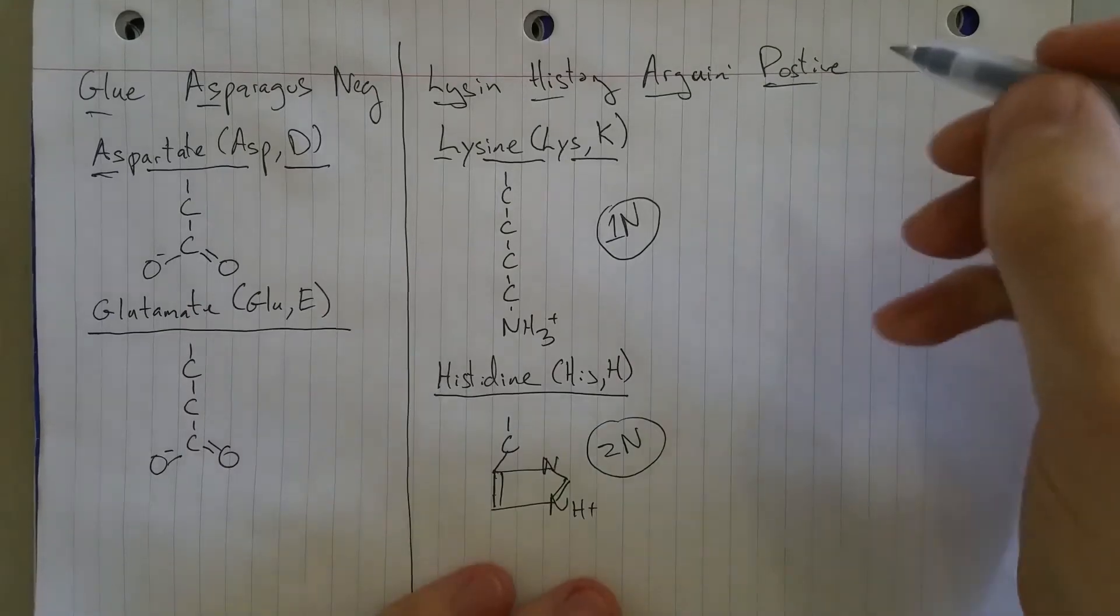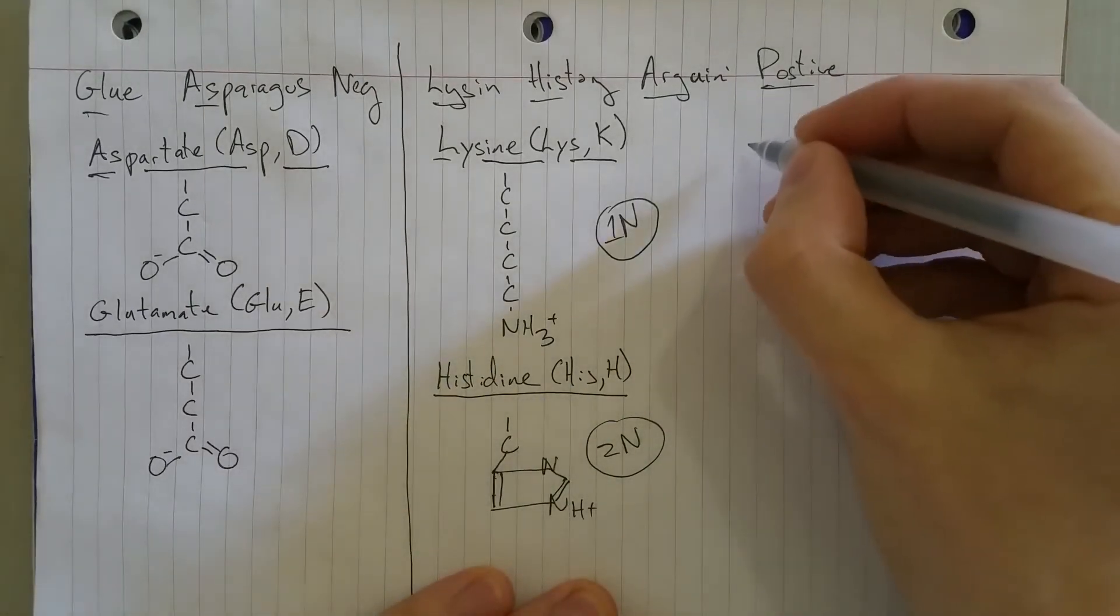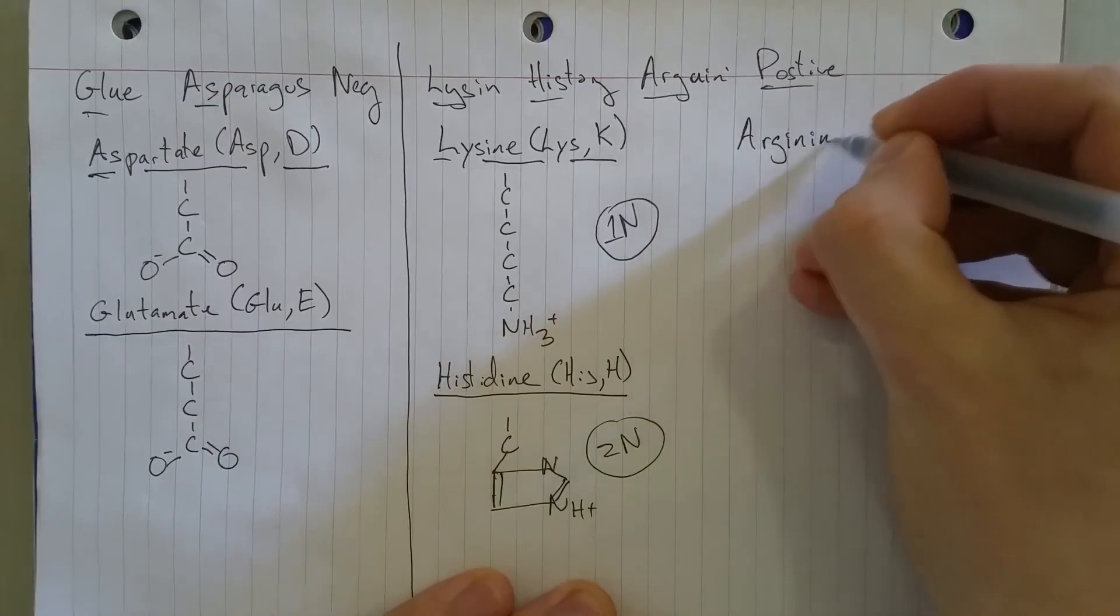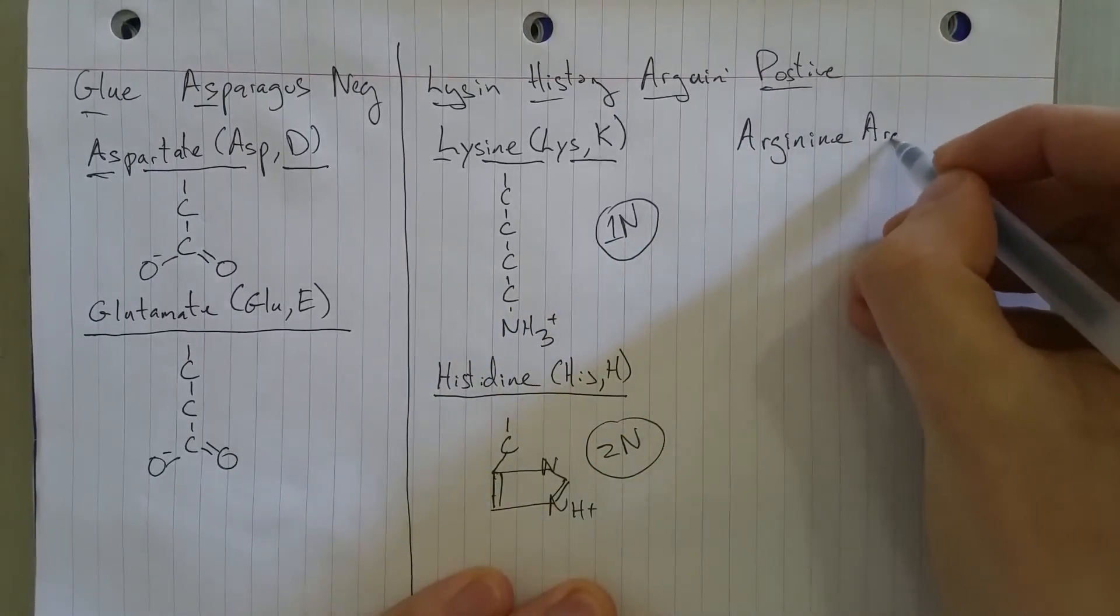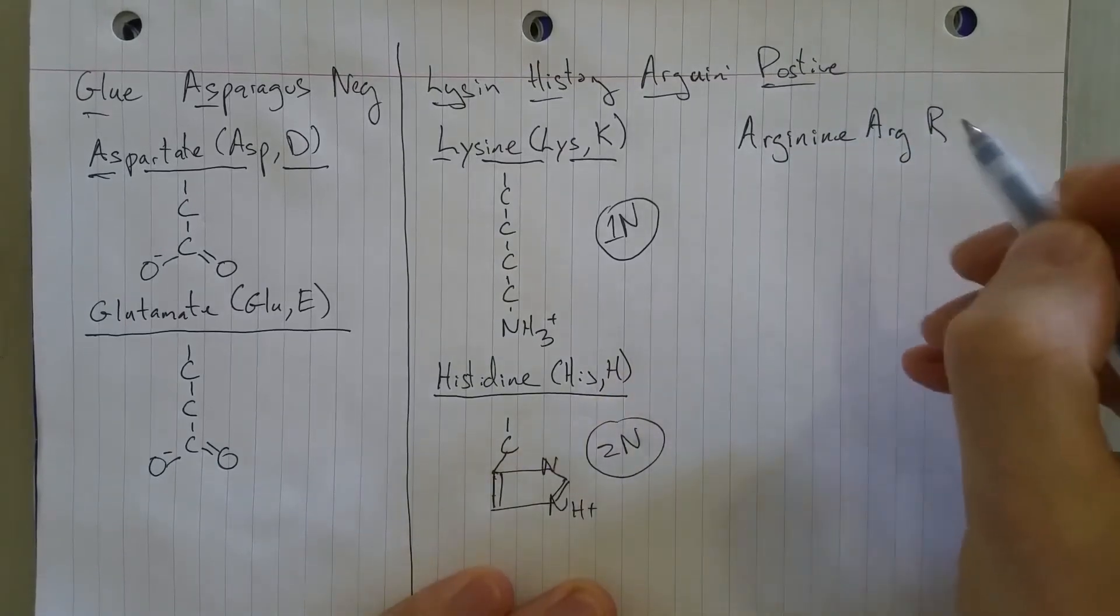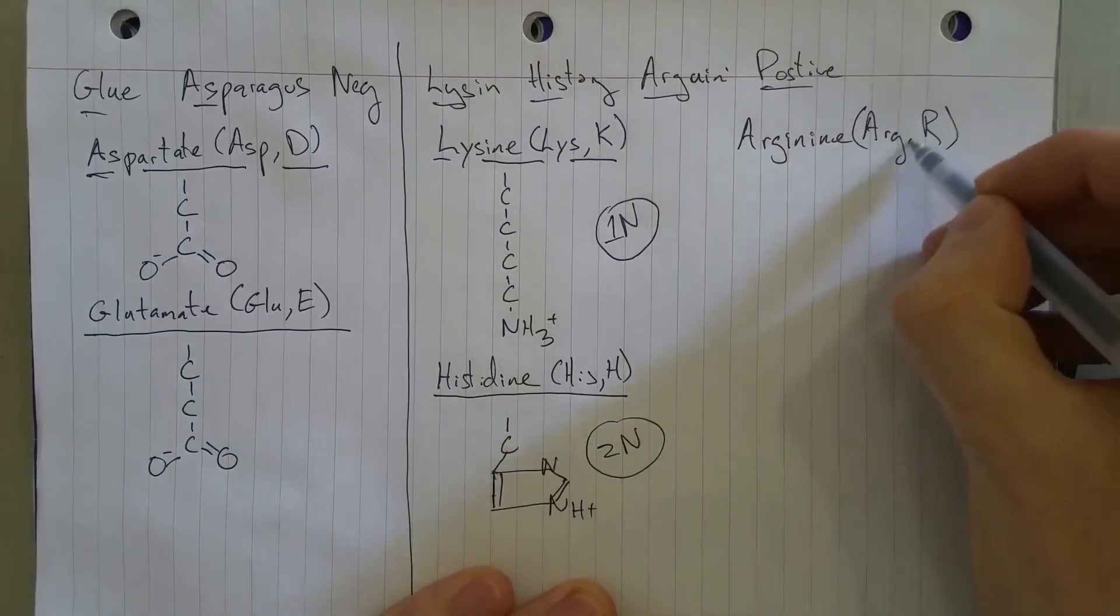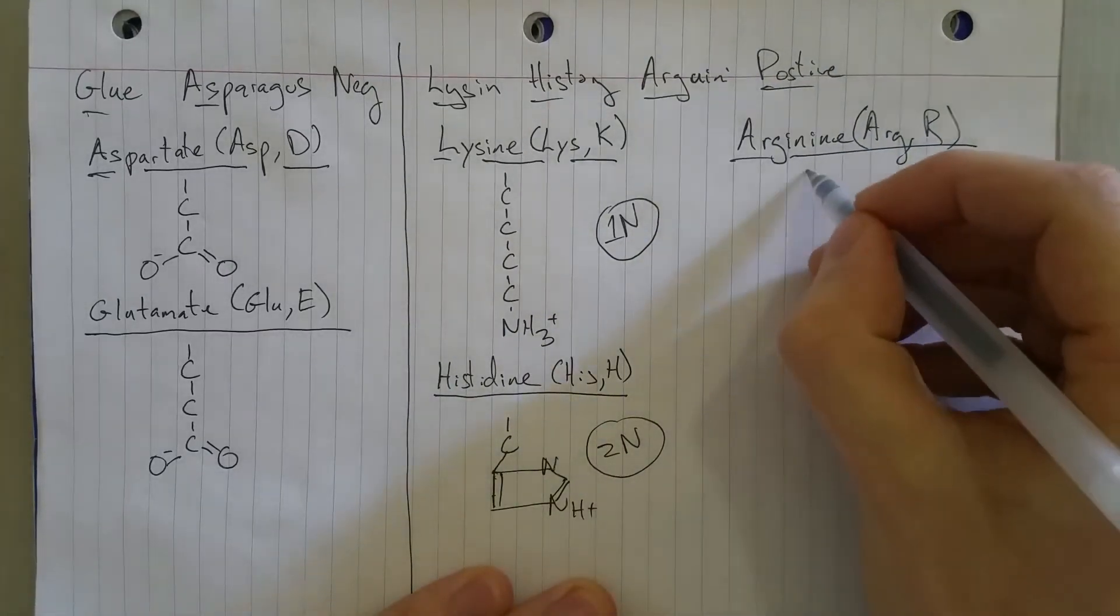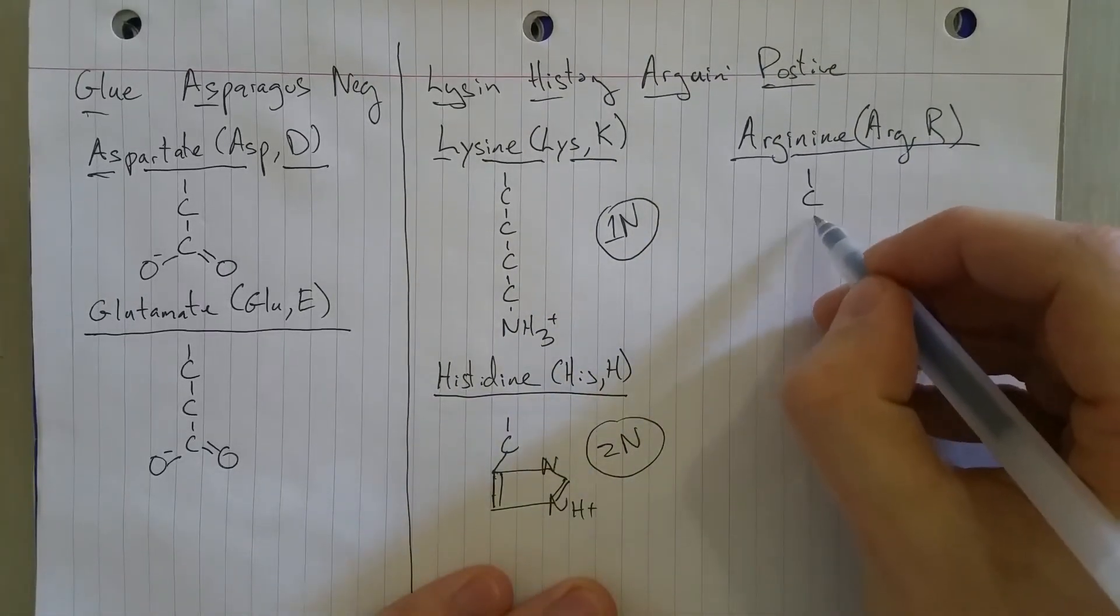Okay, last but not least, arginine. And arg is its abbreviation. And of course, I think like a pirate, arginine. R is the one-letter code. And it's also got four carbons in its chain.